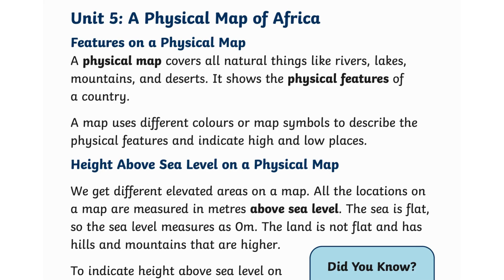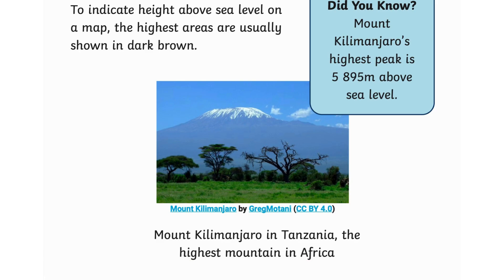On a physical map we get different elevated areas. All locations on a map are measured in meters above sea level. The sea is flat, so sea level measures as zero. Land is not flat and has hills and mountains that are higher.